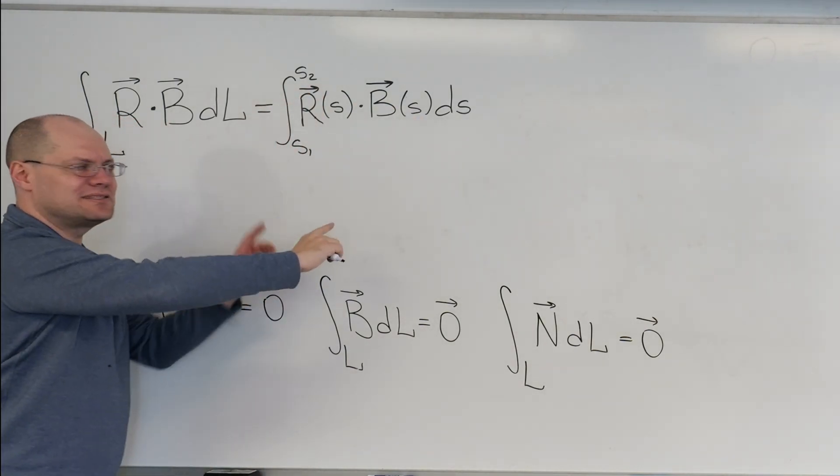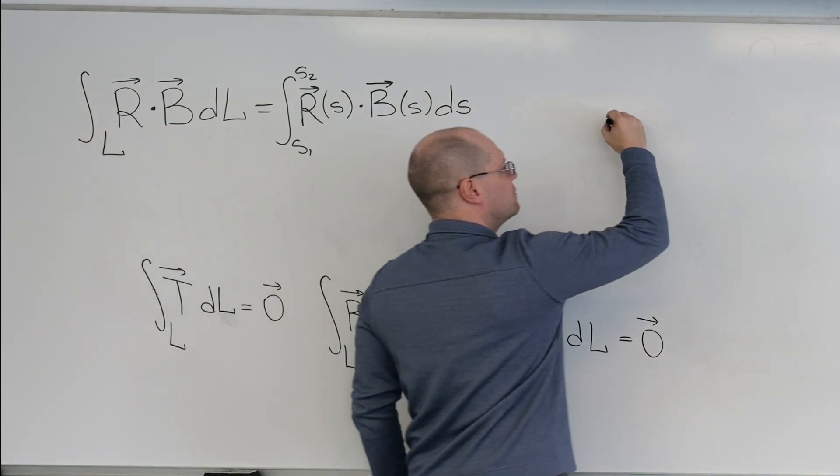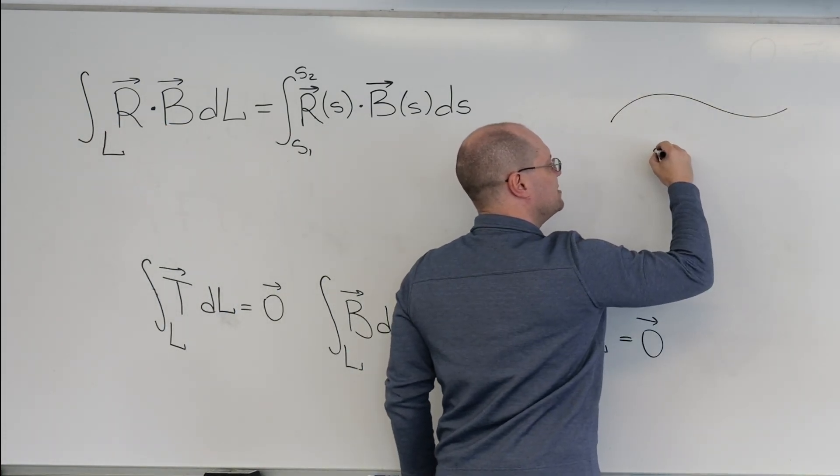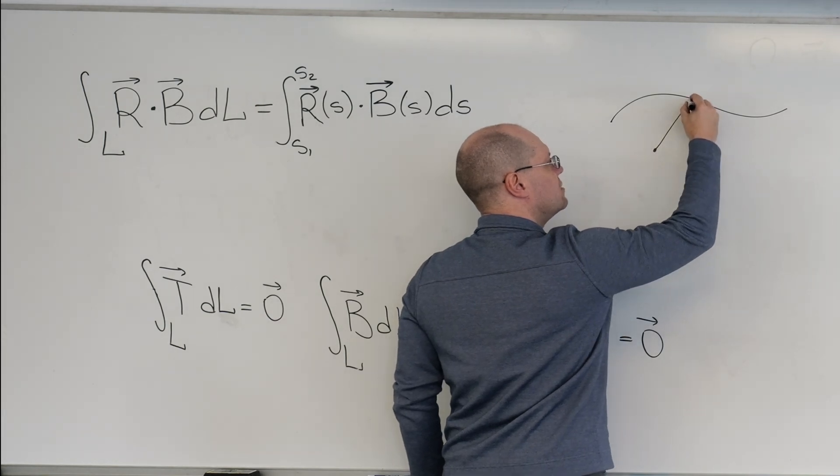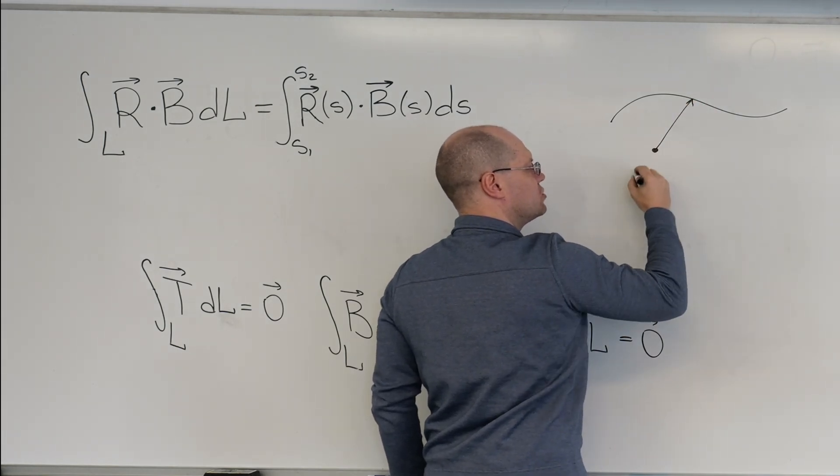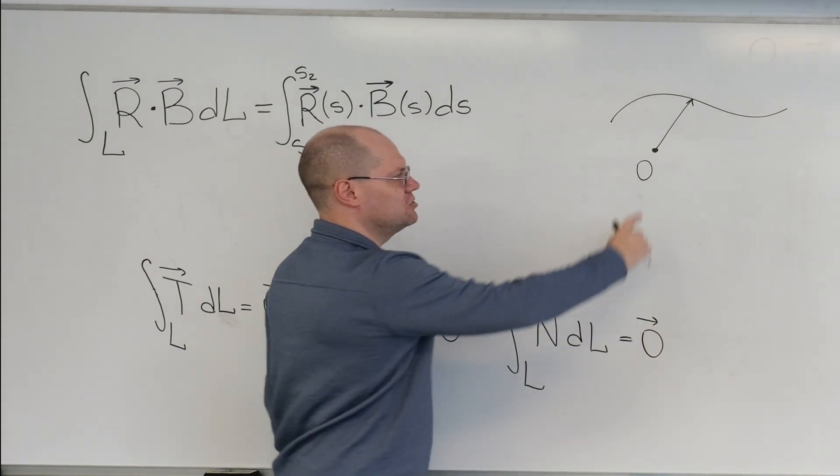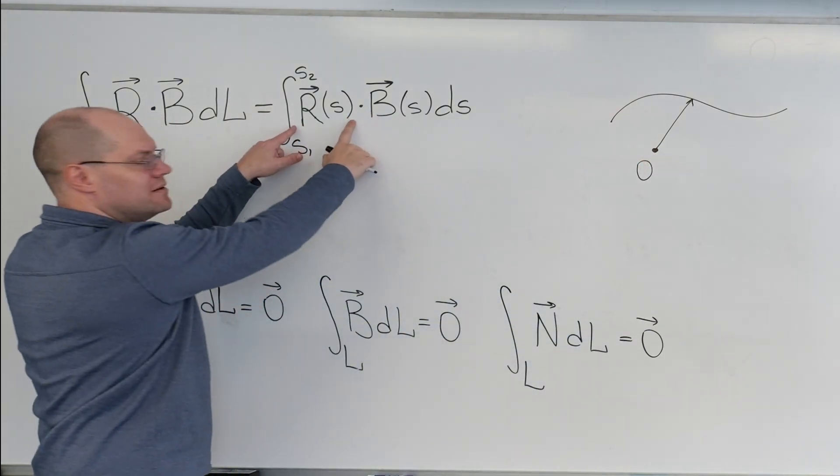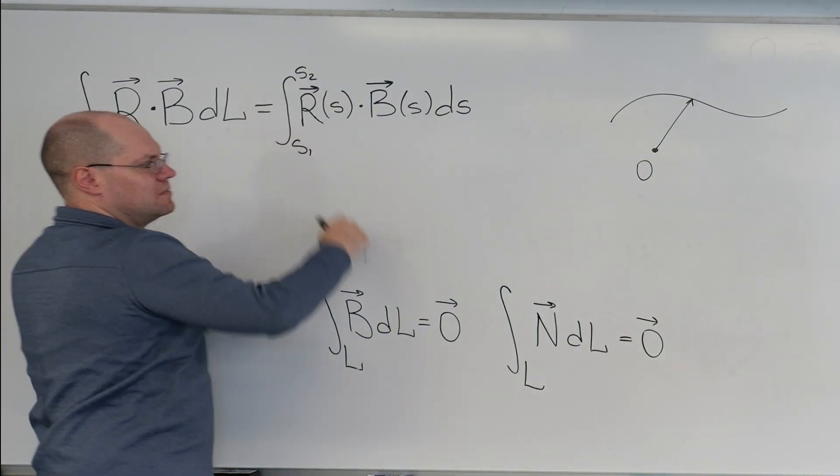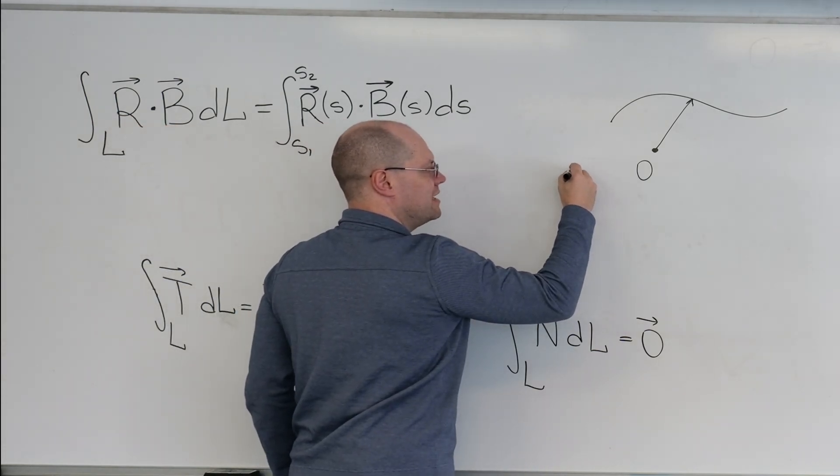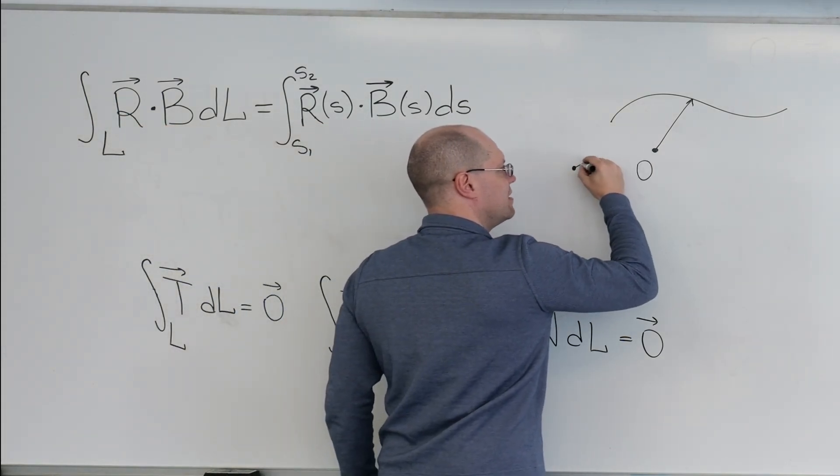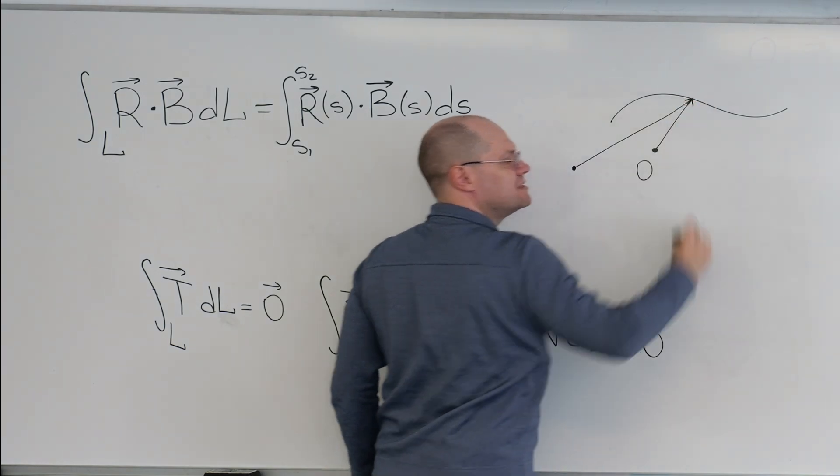But doesn't this integral, if we have a curve, very much depend on where I choose my arbitrary origin O? Because if I choose it here, that's one position vector field. But if I choose it at a different location, let's say here, it would be an entirely different position vector.